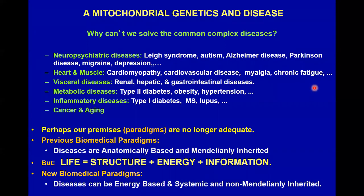These are the neuropsychiatric disorders — in children with E-syndrome or autism; in adults, Alzheimer's, Parkinson's, migraine, depression; or heart and muscle diseases such as cardiomyopathy, cardiovascular disease, myalgia, or chronic fatigue syndrome; visceral diseases such as renal, hepatic, and gastrointestinal problems; metabolic diseases like type 2 diabetes, obesity, hypertension; inflammatory diseases like type 1 diabetes, multiple sclerosis, lupus; multiple forms of cancer; and even aging. With all the investment and effort that people have put into understanding these common problems, we've made surprisingly little progress.